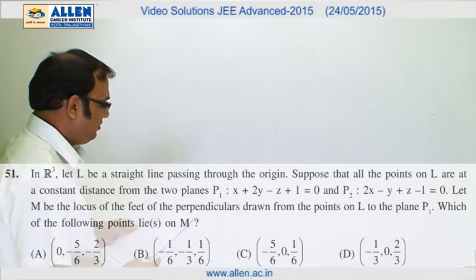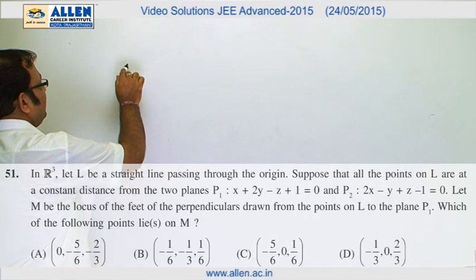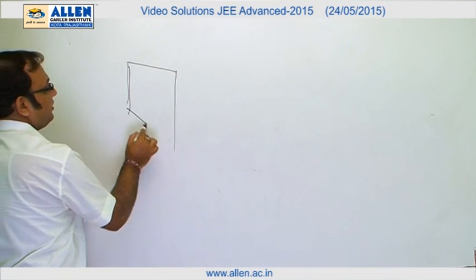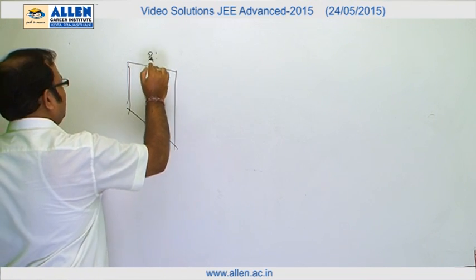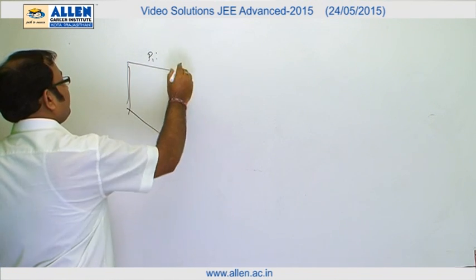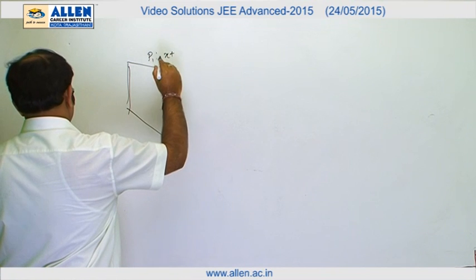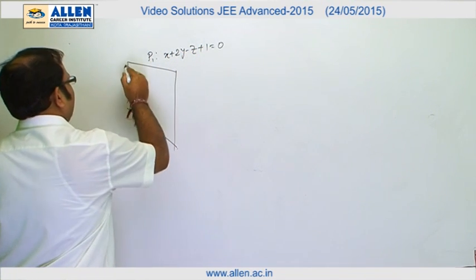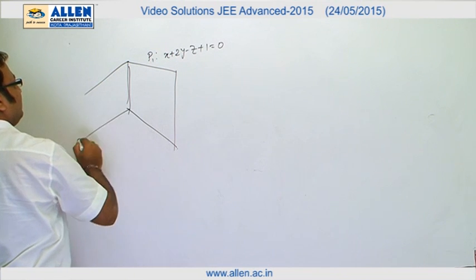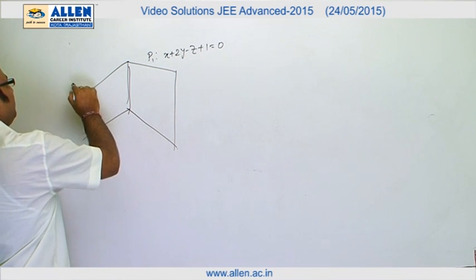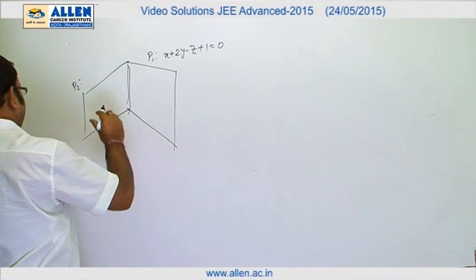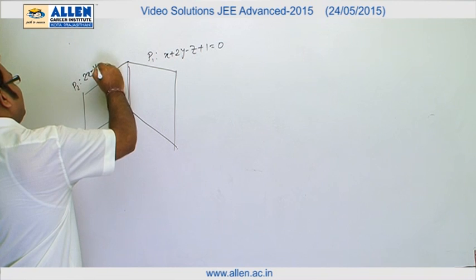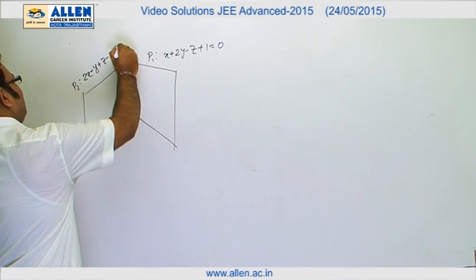In question number 51, we are provided with two planes. Here is plane P1, whose equation is x plus 2y minus z plus 1 equals 0, and there is another plane P2, whose equation is 2x minus y plus z minus 1 equals 0.